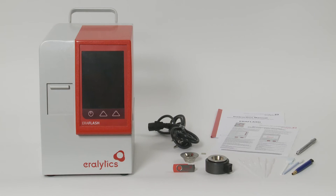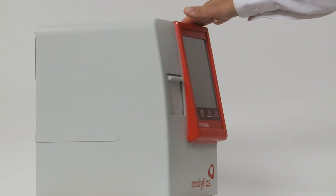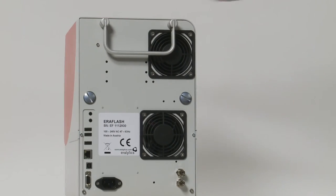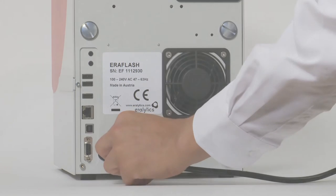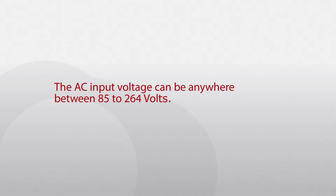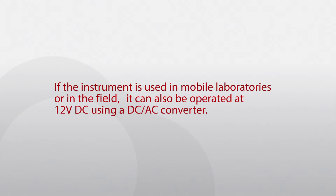Please verify that the delivery is complete and carefully read the instruction manual. Turn the instrument and connect the power cable to the plug on the rear side. The AC input voltage can be anywhere between 85 and 264 volts. If the instrument is used in mobile laboratories or in the field, it can also be operated at 12 volts DC using a DC-AC converter.